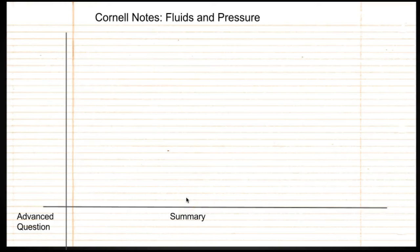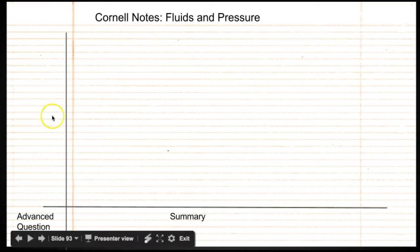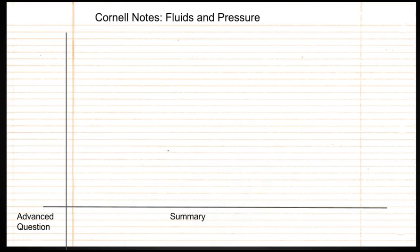Hello students, today we're going to take Cornell Notes. The title is Fluids and Pressure. Just like always, it's just digital. Make sure you write the notes on the right. You have to make up your questions on the left because it's a video. And then a summary here at the bottom and an advanced question over here. And then if the video is going too fast you can just pause it and then catch up and then push play whenever you're ready.